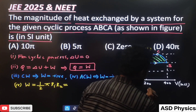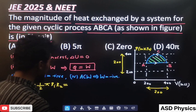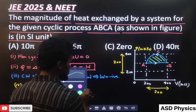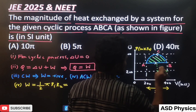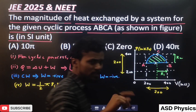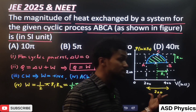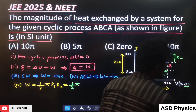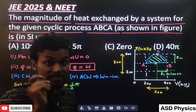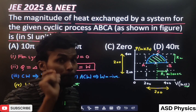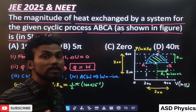Looking at the figure, this length is 200 and this length is 200. I'll take the midpoint line, so r1 is 100. The unit here is cc — centimeter cube. One centimeter cube equals 10 to the power minus 6 meter cube. So r1 equals 100 into 10 to the power minus 6 m³.